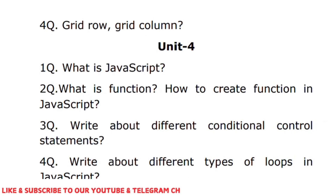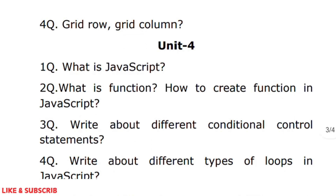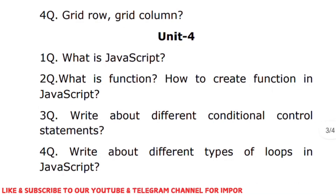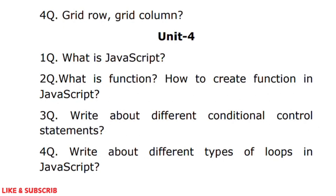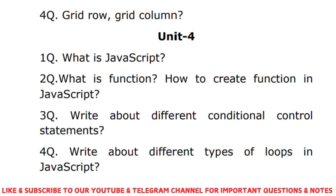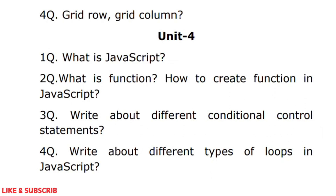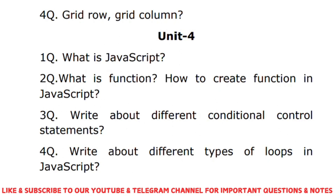Different types of looping statements in JavaScript — the same topics you learned in C language: for loop, while loop, and do-while. Explain all loops in detail with definitions and syntax. You can then write one example program for either for loop or while loop. Similarly, for conditional control statements, write all the definitions and syntaxes and then one example program.